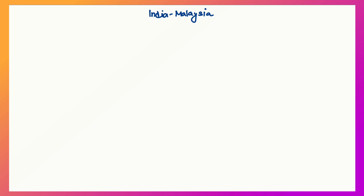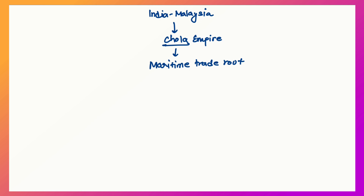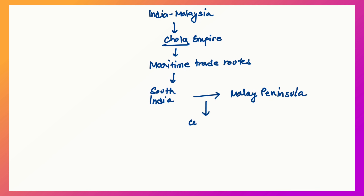The relationship between India and Malaysia is a very historical one. I'll make a small mind map for all of you. Basically, this relationship was influenced by the Chola Empire — between the 9th and 13th centuries — because the Cholas had established maritime trade routes connecting South India to the Malay Peninsula. That is the origin of our cultural, economic, and trade relationship with Malaysia.